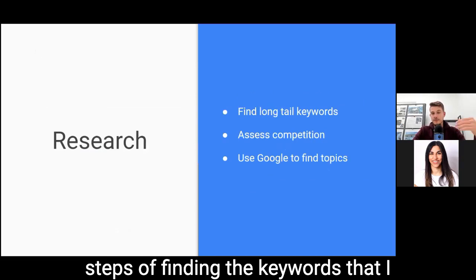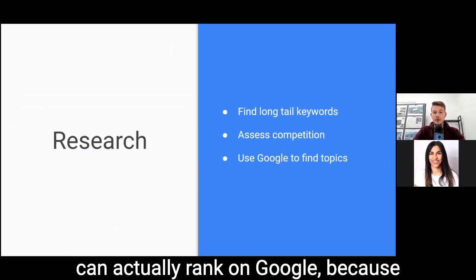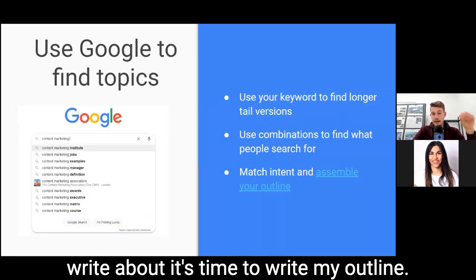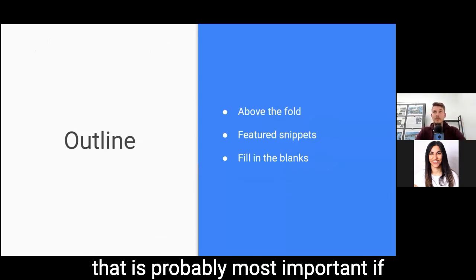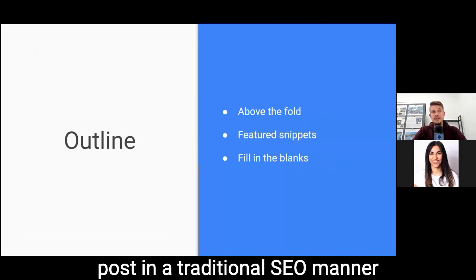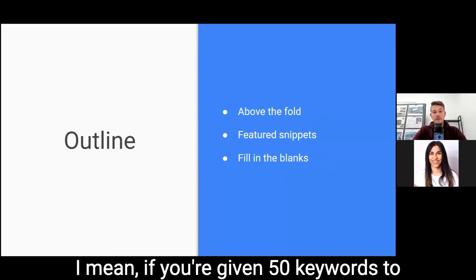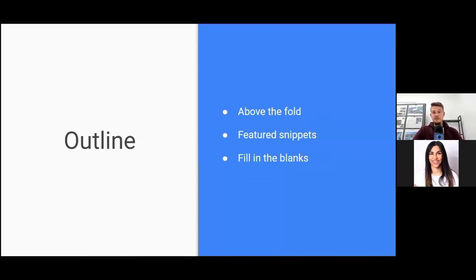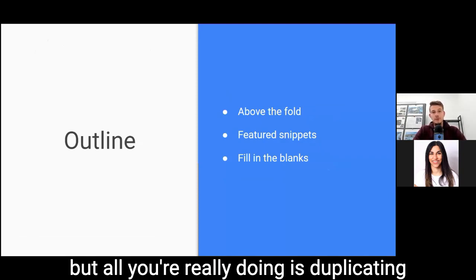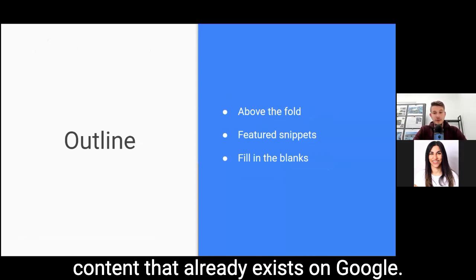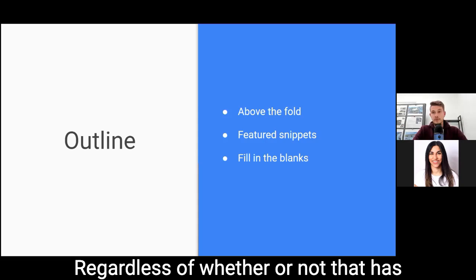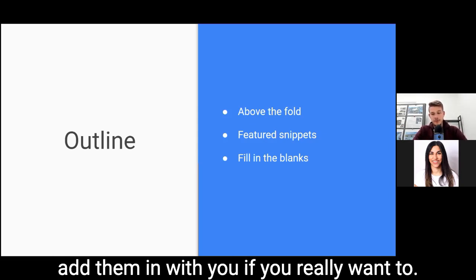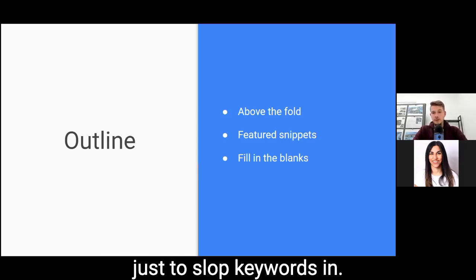Once you've gone through those three steps — finding keywords to target, assessing whether you can rank, and finding topics — it's time to write your outline. This is probably the most important part if you're not assembling a blog post in a traditional SEO manner. Traditional SEO might mean including 50 keywords, using five of them ten times, ten of them five times. I don't like writing outlines or copy like that — it just duplicates keywords and therefore content that already exists on Google. I'd rather create the best version of what's available online.